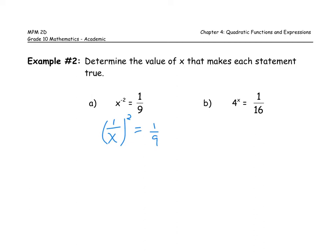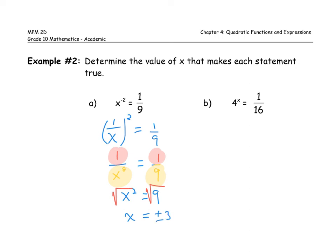Extending and simplifying: one squared over x squared equals one over nine. My numerators are both one, so by default my denominators must also be equal, meaning x squared equals nine. I can undo that square by taking the square root: the square root of x squared is x, and the square root of nine is either positive three or negative three, so I include both solutions.